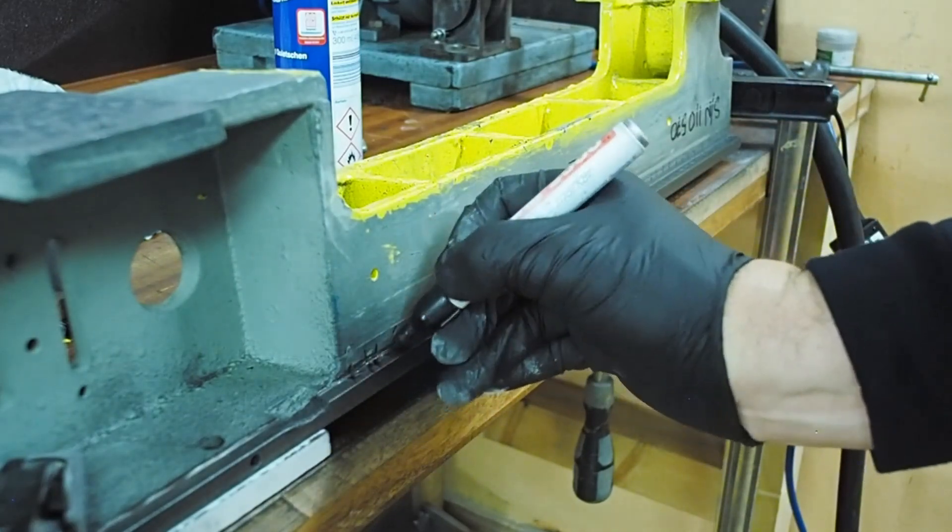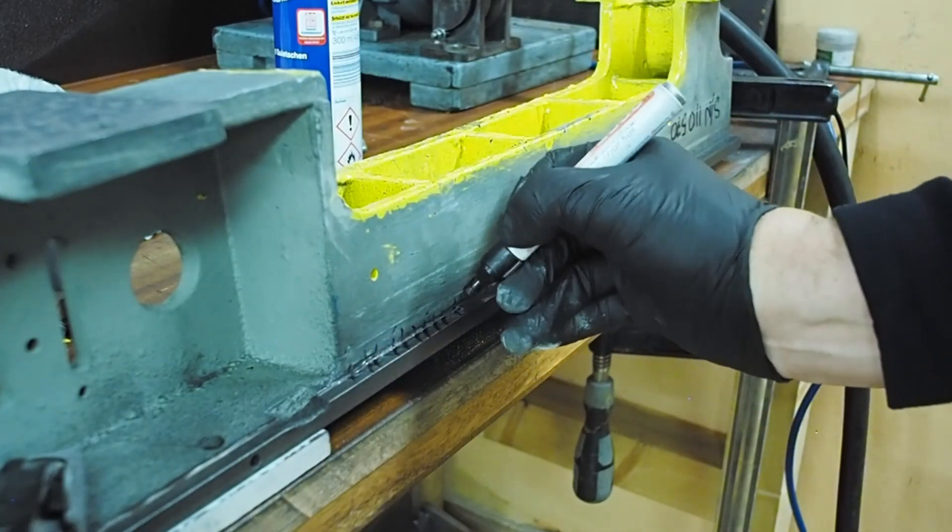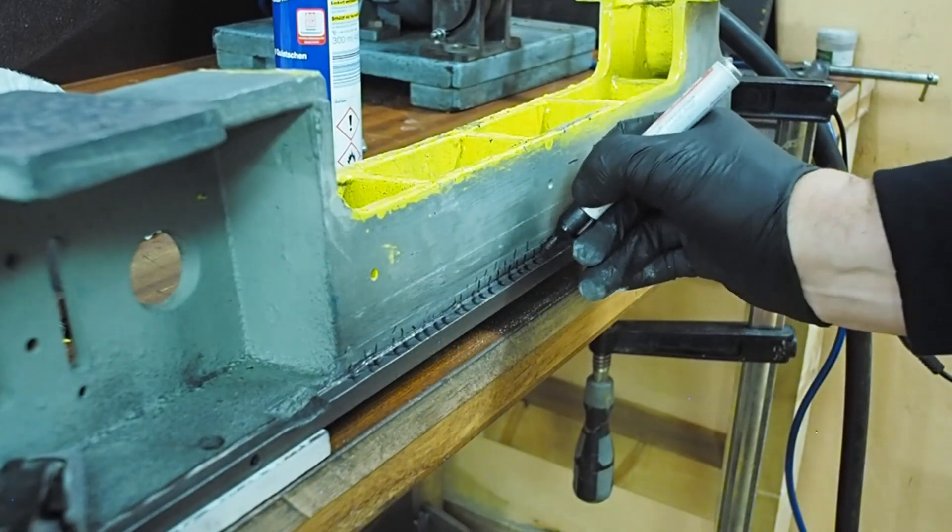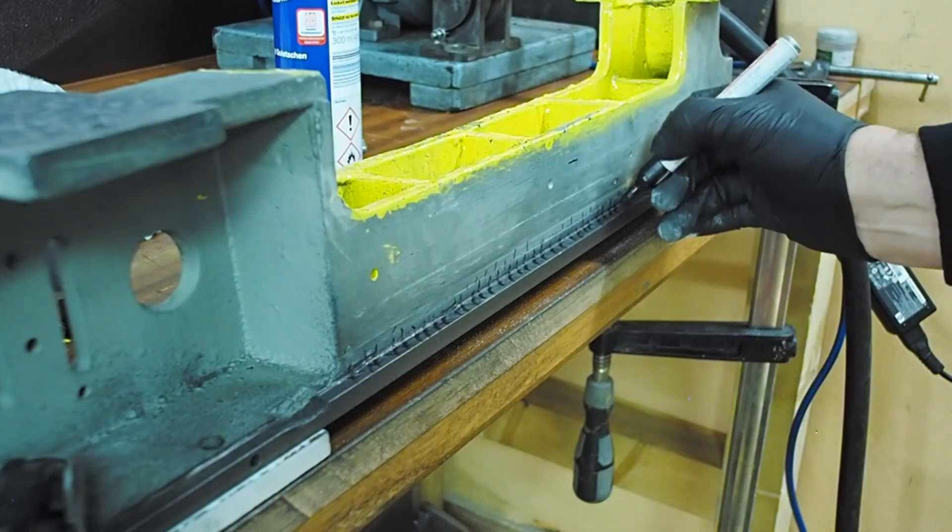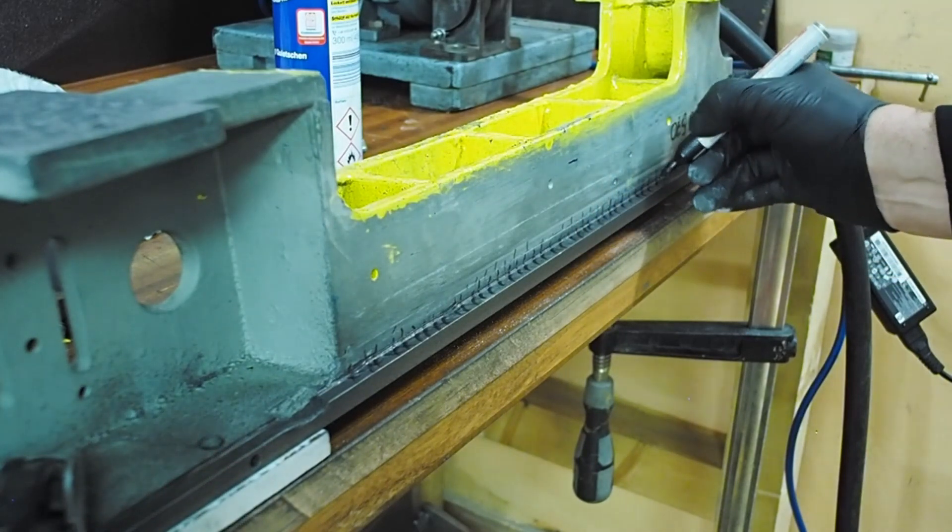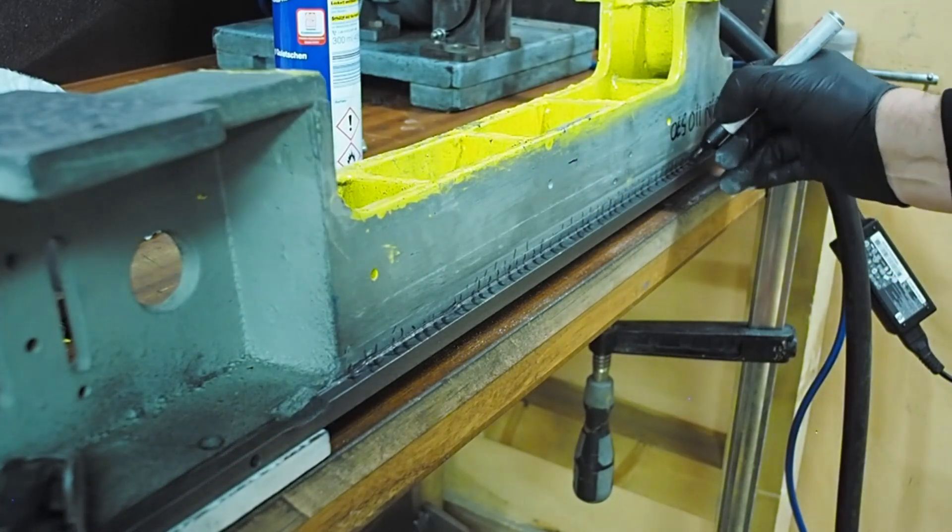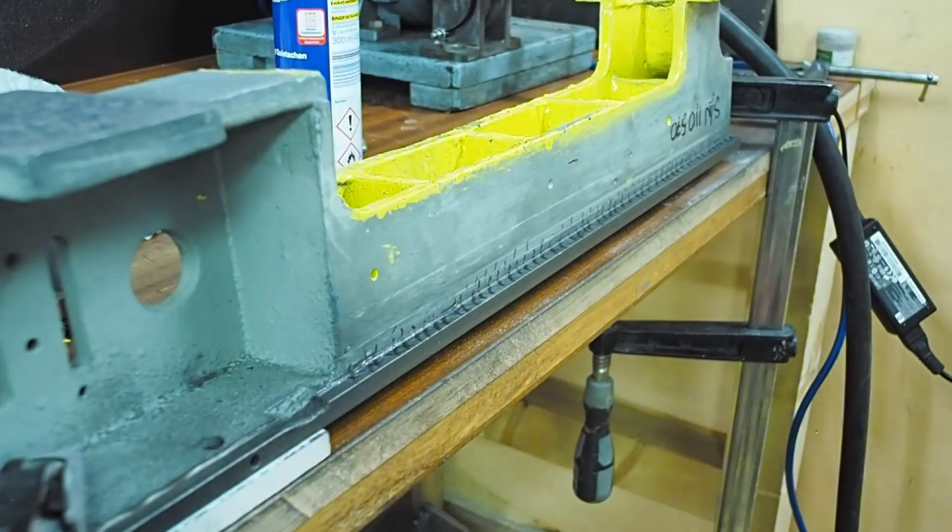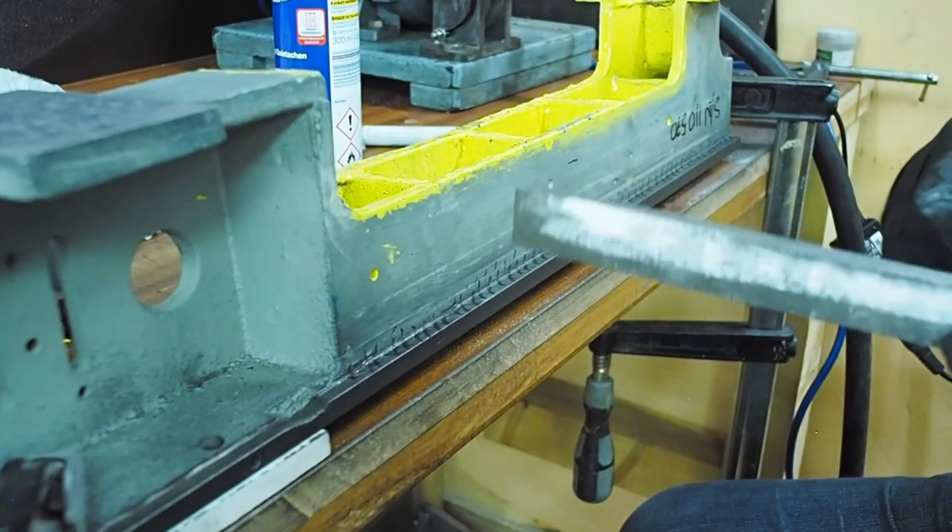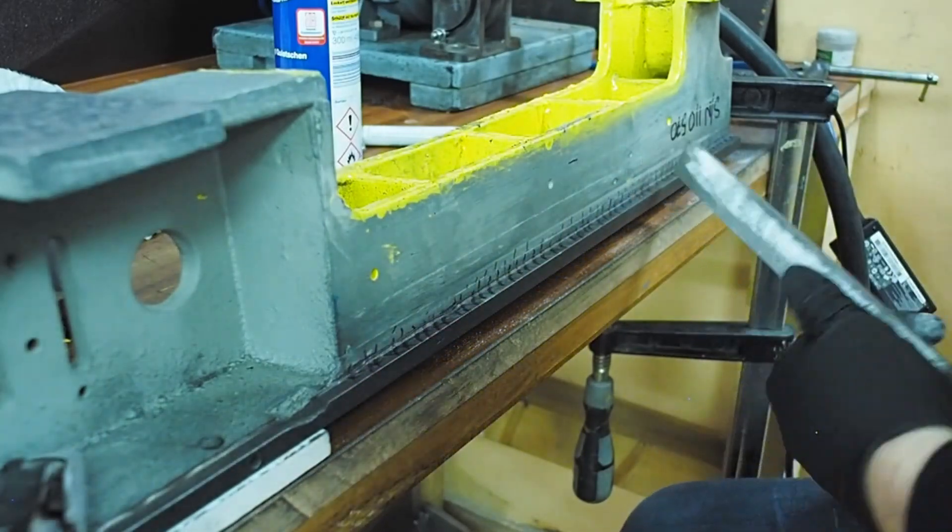So, just marking up across here to see where I'm taking off metal. Just trying to remove that step from the back of the way. I've now switched to a file with a smooth edge.